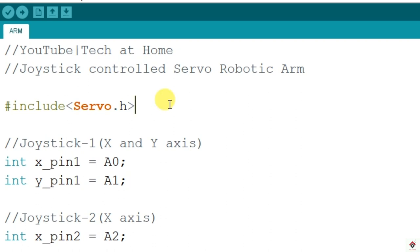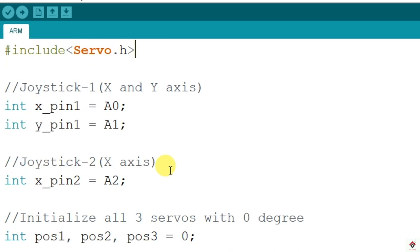We have declared the servo header file, and we have two joysticks here. From first joystick we'll be using both axes x and y connected to A0 and A1, and from the second joystick we'll use only the x-axis.